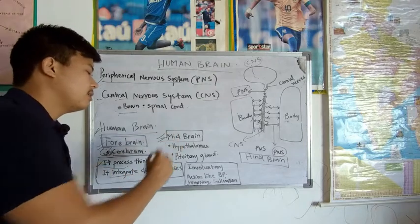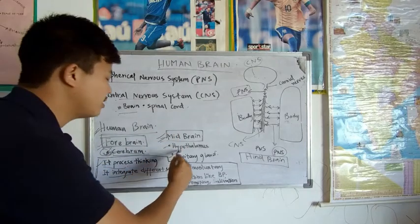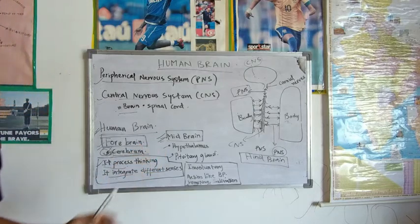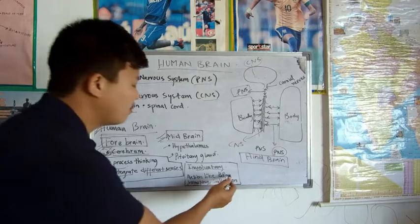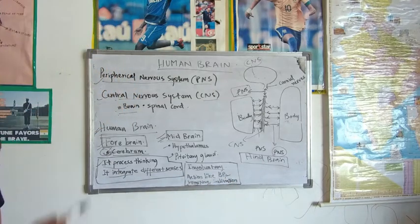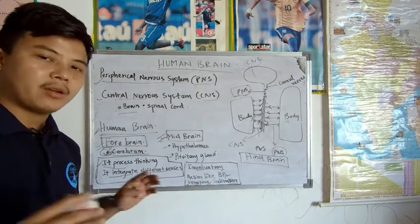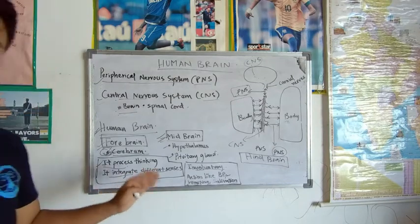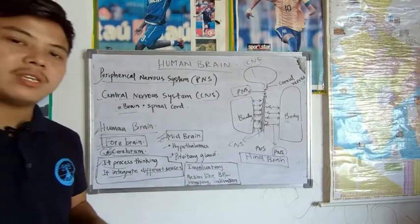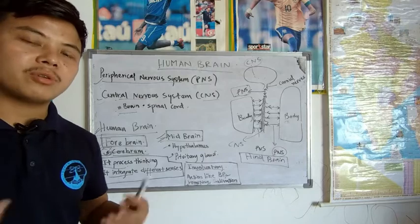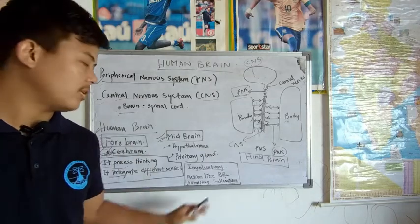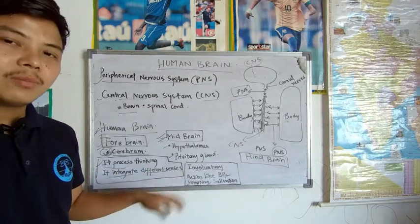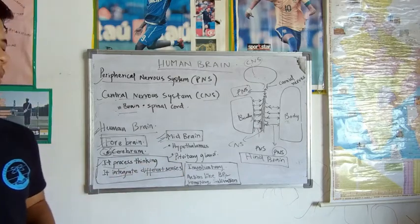Next we have the midbrain. The midbrain consists of the hypothalamus and the pituitary gland. Its function is to process all involuntary actions — actions like blood pressure regulation, vomiting, and salivation. Blood pressure cannot be controlled voluntarily, vomiting cannot be controlled, and salivation happens automatically when you see food. All these involuntary processes take place in the midbrain.